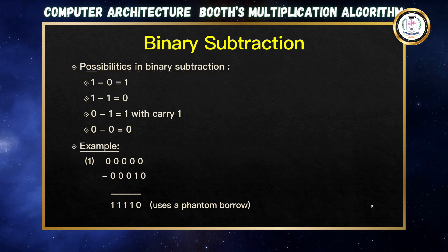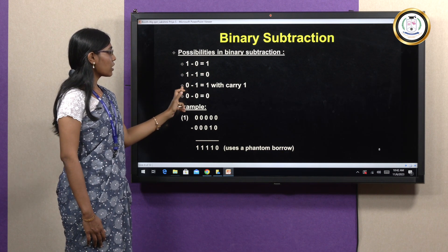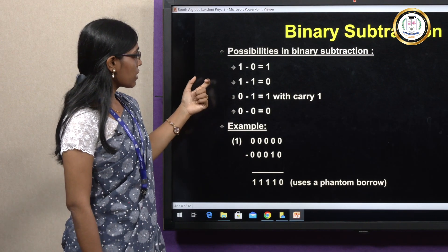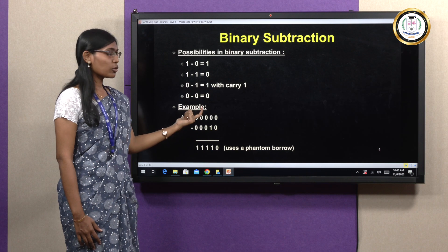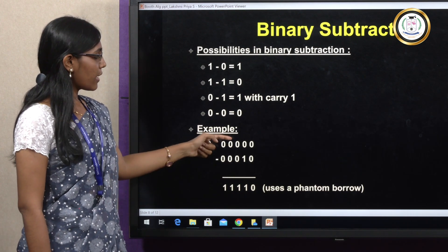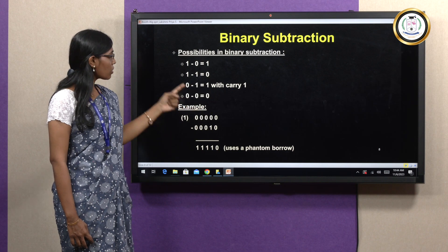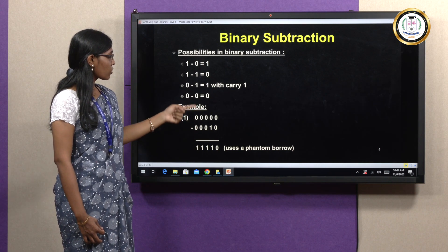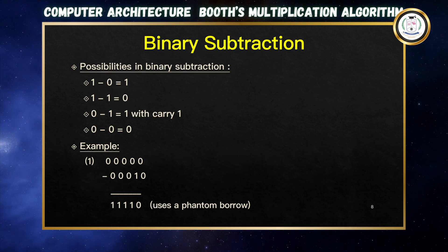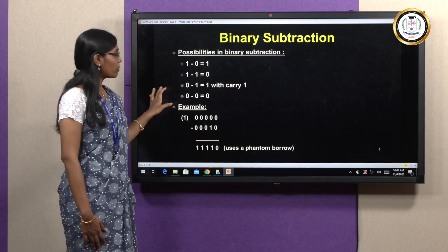For binary subtraction: 1-0=1, 1-1=0, and 0-1=1 with borrow 1, and 0-0=0. For example, subtracting two 5-digit binary values: 0 minus 0 is 0, then 0 minus 1 gives 1 with a borrow, and so on, yielding four 1s and a 0. The leftmost borrow is dropped. This is how binary subtraction is performed.